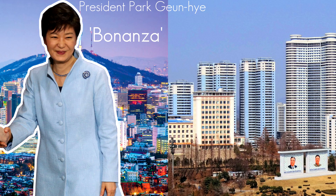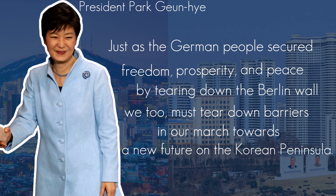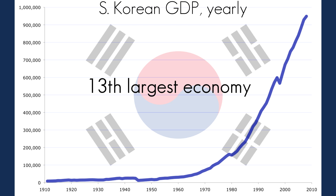and peace by tearing down the Berlin Wall, we too must tear down barriers in our march towards a new future on the Korean peninsula. But according to the IMF and World Bank, South Korea is the world's 13th largest economy with per capita income of well over 34,000 US dollars.